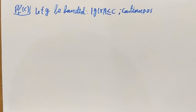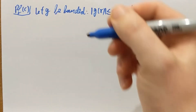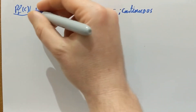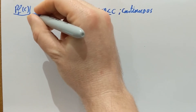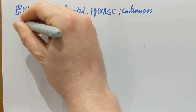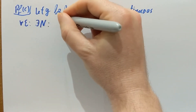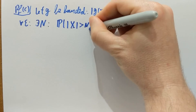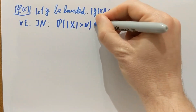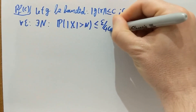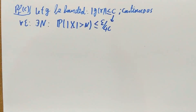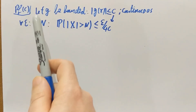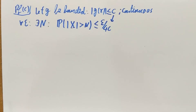Any continuous function will be uniformly continuous on a compact interval. Here's how I'll construct that compact interval: the limiting random variable x has a distribution, and for every epsilon there's going to be an N such that the probability of x being outside the range [-N, N] is less than epsilon over 4c, where c is the bound on G. That just uses the fact that if you go far enough with the distribution, the tail probability is as small as you want. So fixing epsilon, I pick N for which this is true.